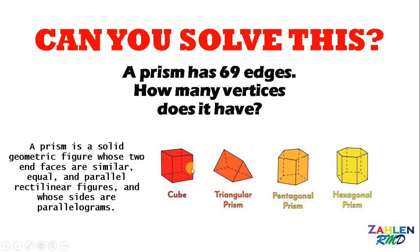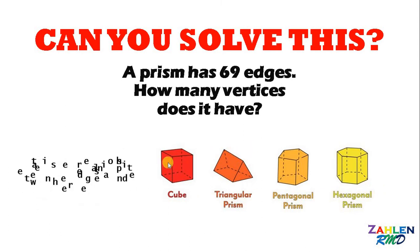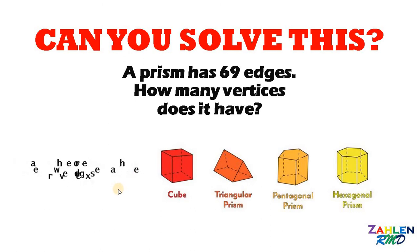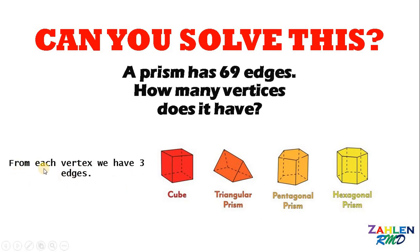Given a prism, the question is: what is the relationship between the number of edges and the number of vertices? Notice that from each vertex, we have three edges. Notice in our figure, if we have a vertex, then it is connected with three edges.